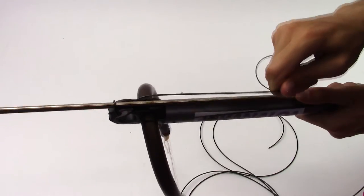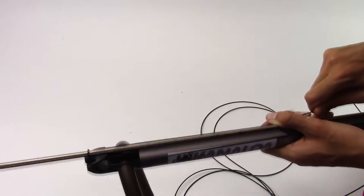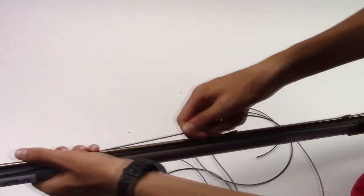Wrap the shooting line on the gun until the end of the line is approximately 3 inches from the line release.